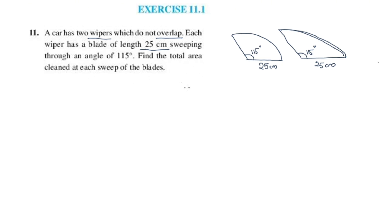These two blades — the total area cleaned by both blades. It is very easy. Since both wipers are identical with 115 degrees and blade length 25 cm, we can simply find the area of one and multiply by two.